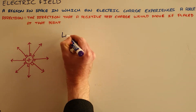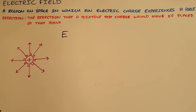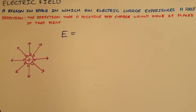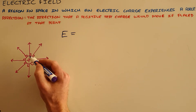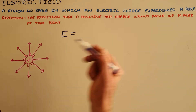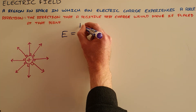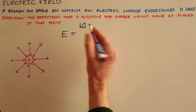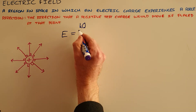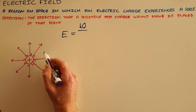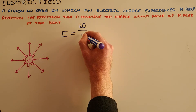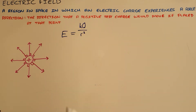The symbol for electric field is uppercase E. The electric field is directly proportional to the size of the charge — a bigger charge creates a stronger electric field around it. We still have our constant from Coulomb's law, and the field lines get further apart the further away we move from the object, so the inverse square law applies here.